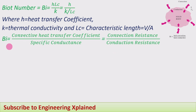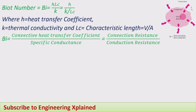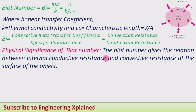The Biot number is defined as the convective heat transfer coefficient to the specific conductance. H is the convective heat transfer coefficient, and K / Lc is the specific conductance — thermal conductivity per unit length. This can also be expressed as the ratio of convection resistance to conduction resistance: the conduction resistance within the solid to the convection resistance from the solid to the surrounding fluid. The Biot number gives the relation between internal conductive resistance and convective resistance at the surface of the object.